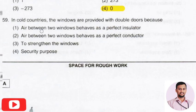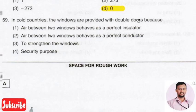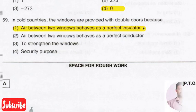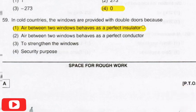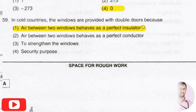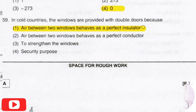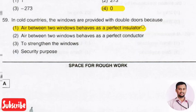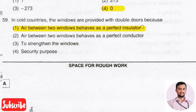The next question: in cold countries, windows are provided with double doors because? The right answer is option 1 — the air between the two windows behaves as a perfect insulator. This resists cold air from entering into the house or system, and so double-door windows are used in cold countries.